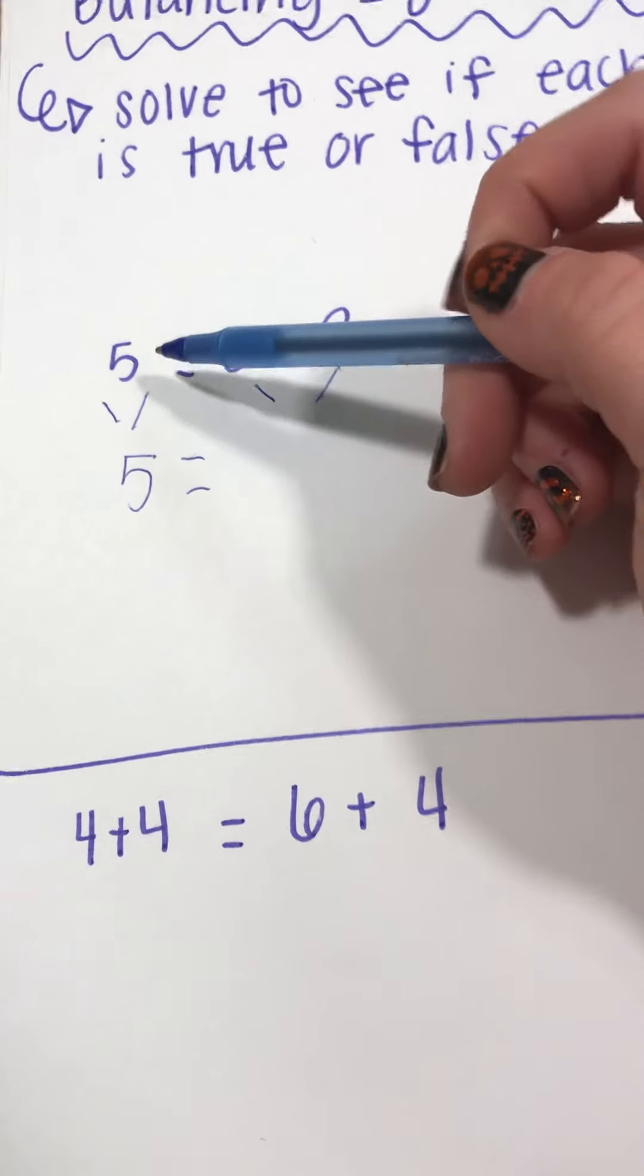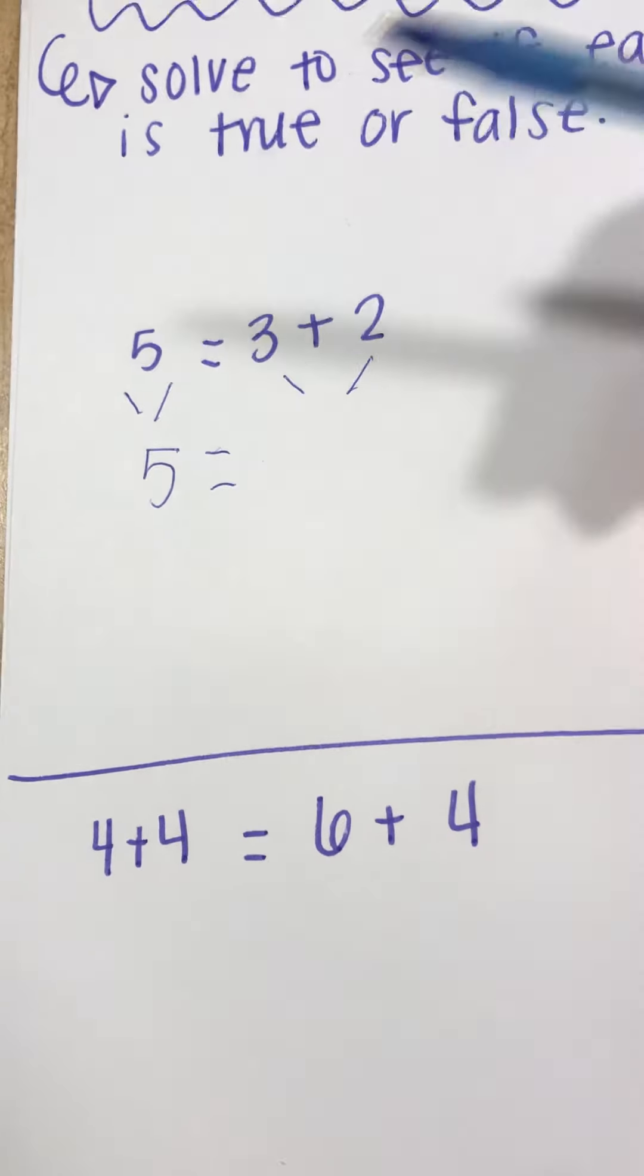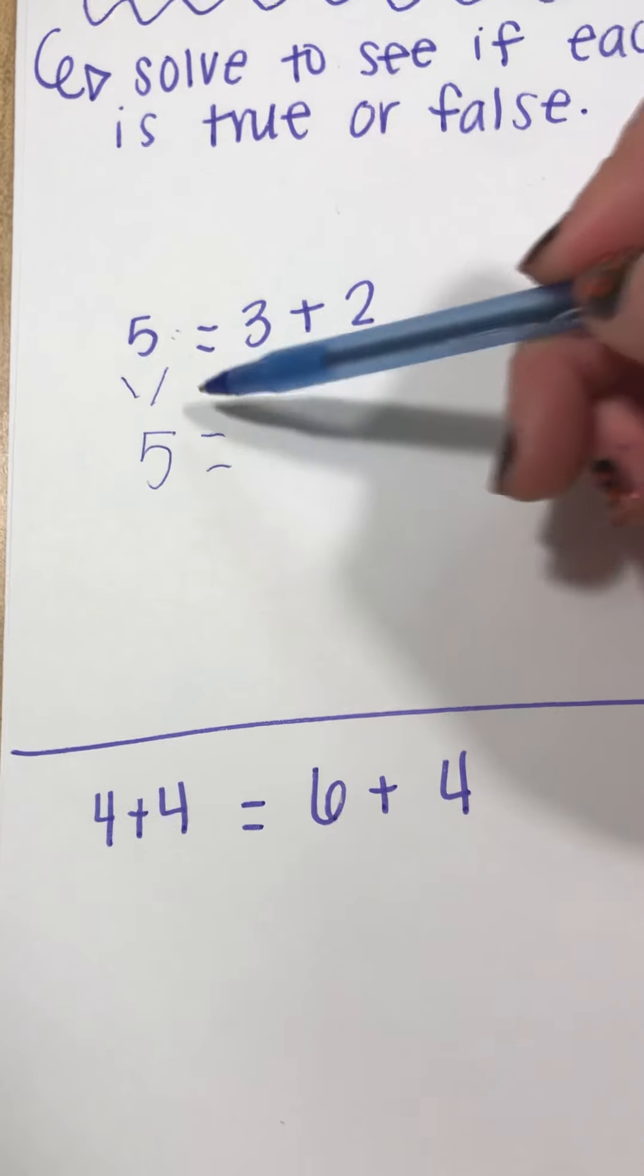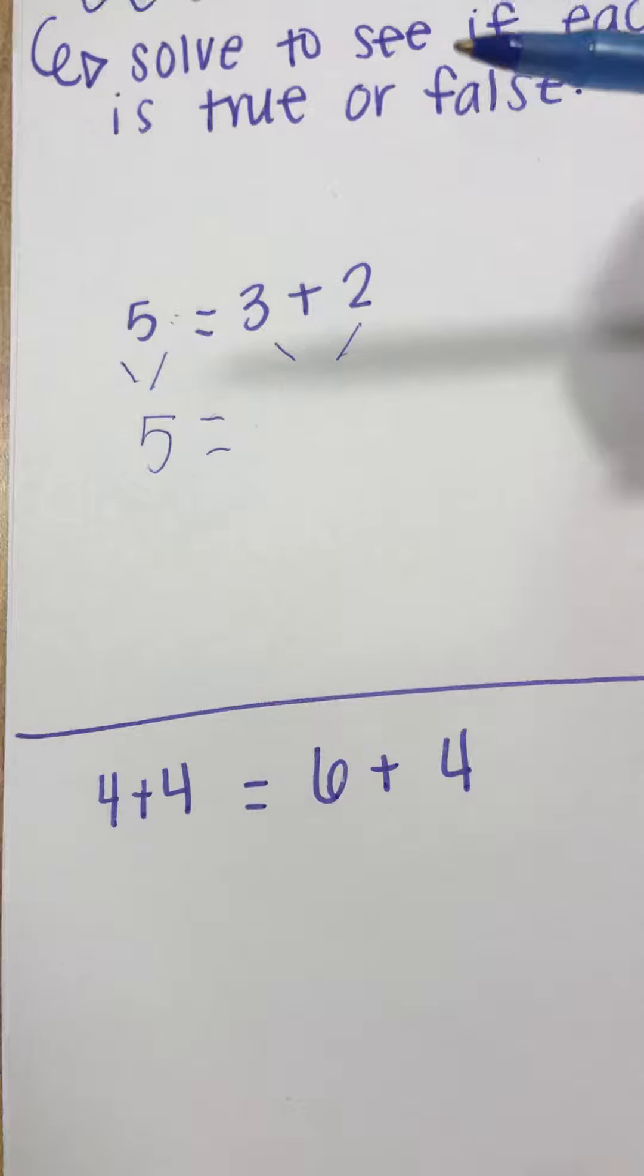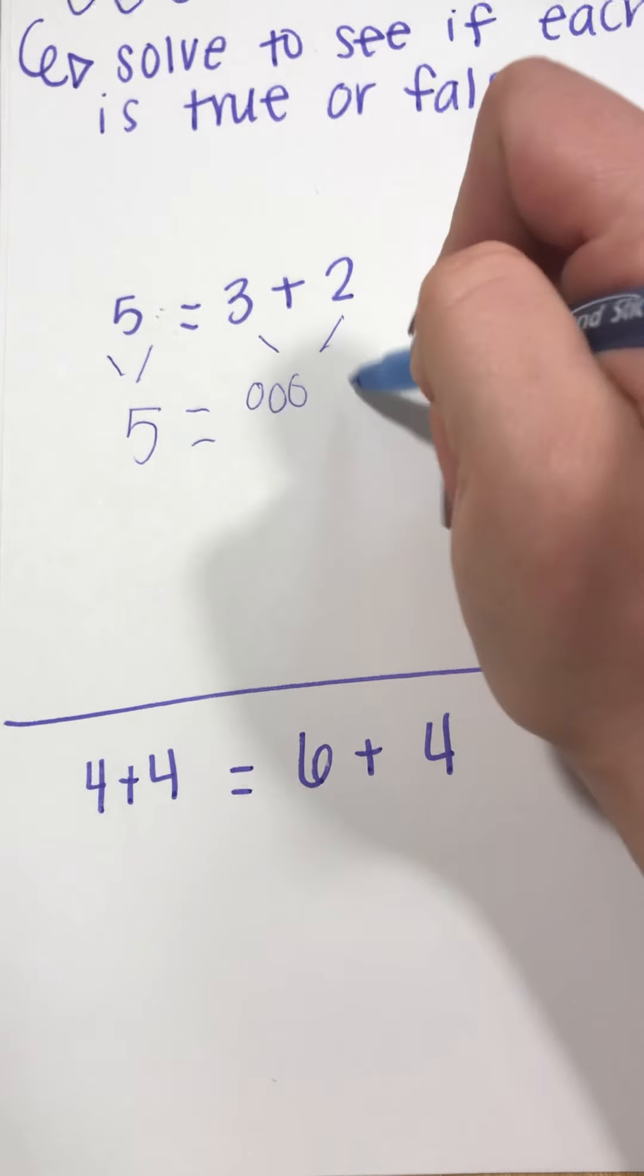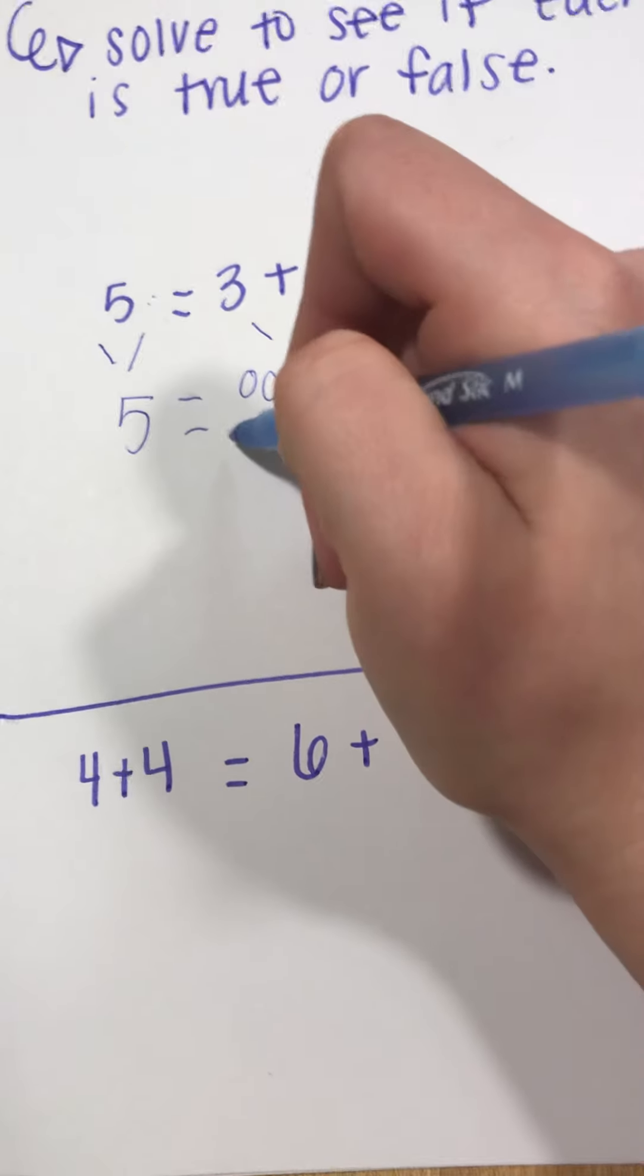A lot of students make the misconception that they have to solve something on each side, so just have them really pay attention to what symbol is coming next, the equal sign, so they don't have to do anything. So on this side I could draw a picture, one, two, three, one, two, five.